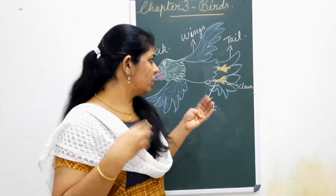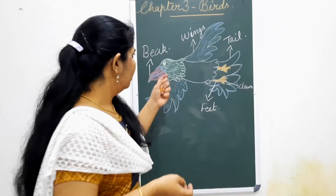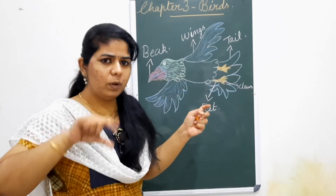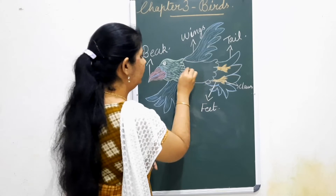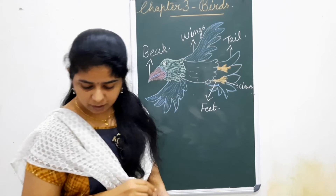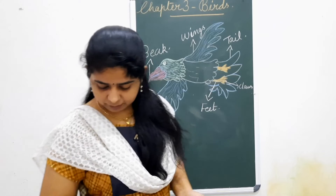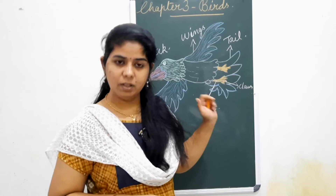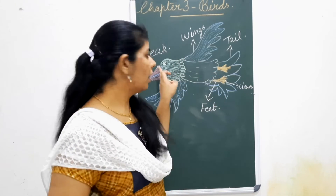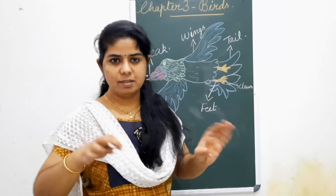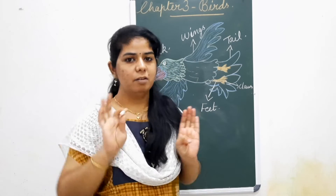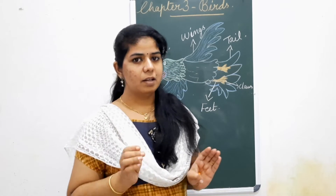Which are the other body parts? They have eyes, and their body is covered with feathers. Their body is fully covered with feathers. These are the important parts.